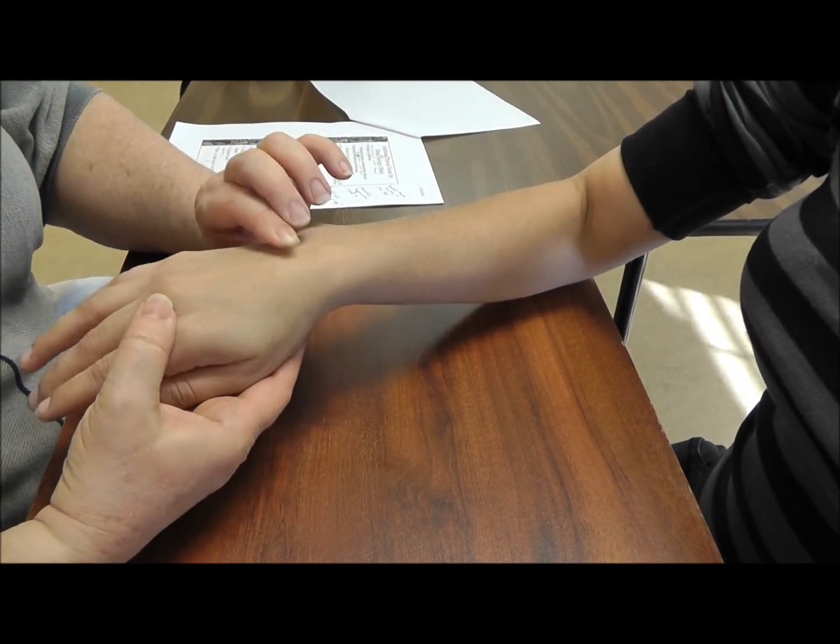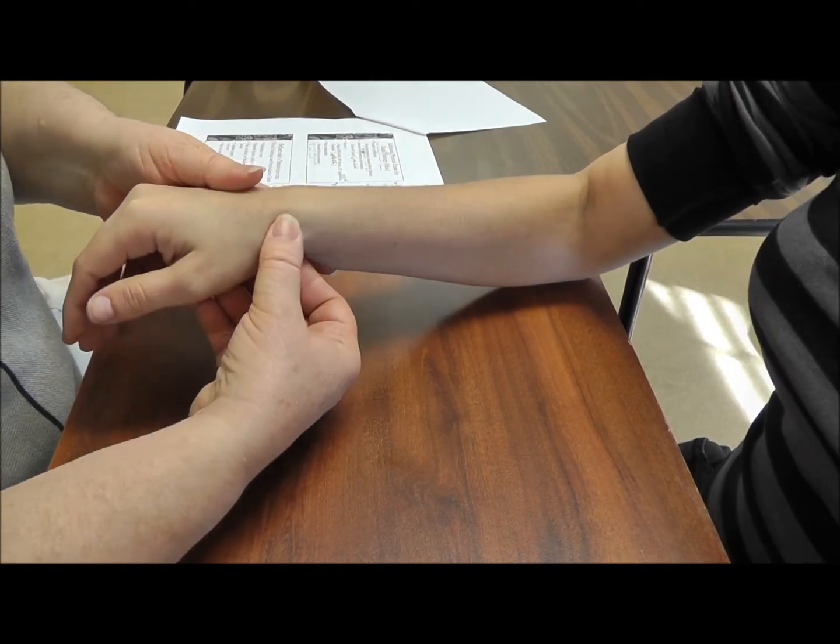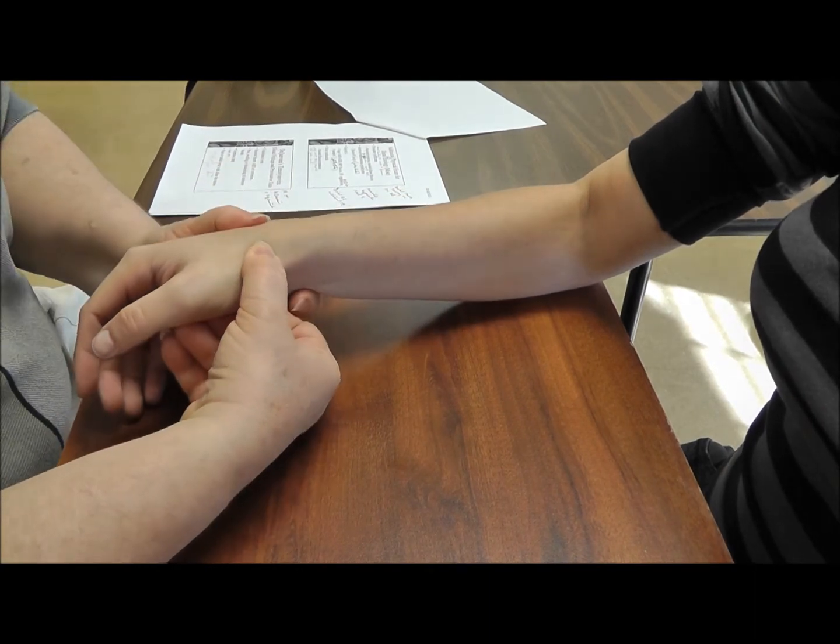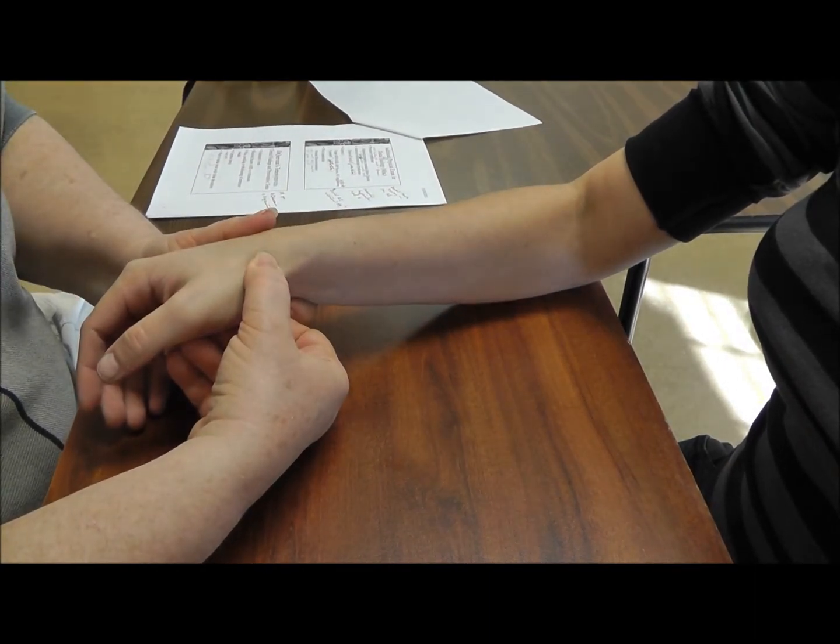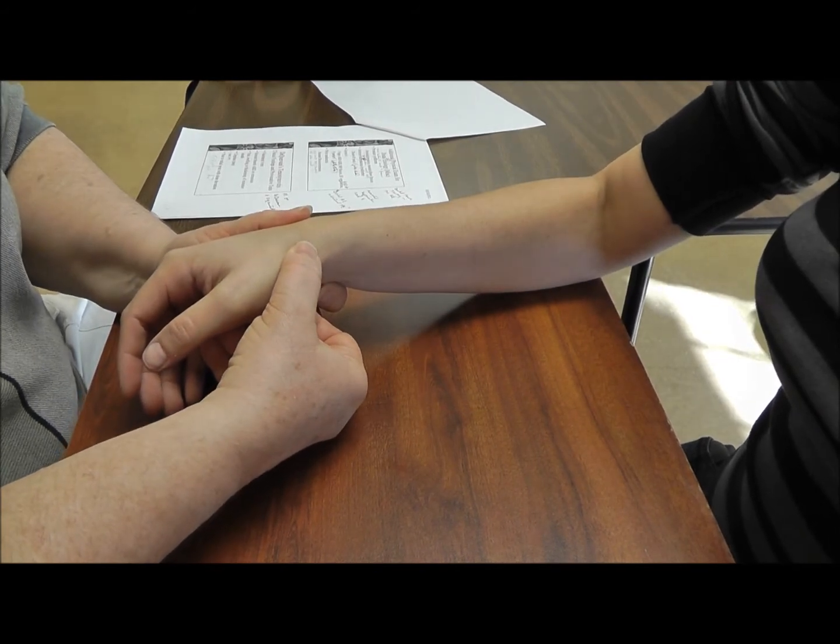If you fall off into this divot here, you know you're in the area of the capitate. If you're here at the base of the thumb, you know you're at the trapezium. So if you get some discomfort here, you might want to survey and see if there are signs of arthritis. Okay.